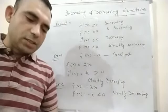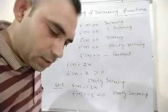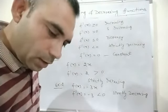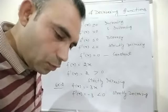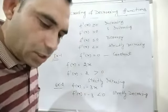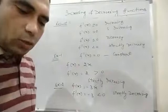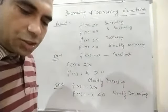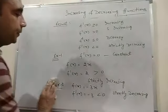Let us take some questions from Exercise 6.2. Exercise 6.2, first question: show that the function given by f(x) = 3x + 17 is strictly increasing on ℝ.